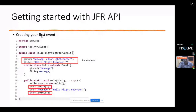To create your first JFR event, you use the Java Flight Recorder API by creating a simple class that extends the Event class from the jdk.jfr package. You can create multiple types of events or define your own. Once you create an object of your event class, you use two primary methods: event.begin() to start the recording and event.commit() to stop it and write the recording to a file.